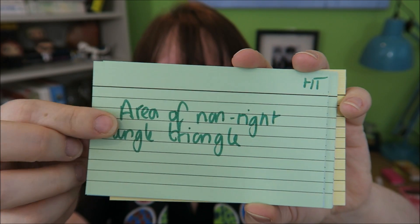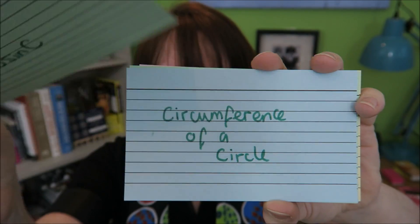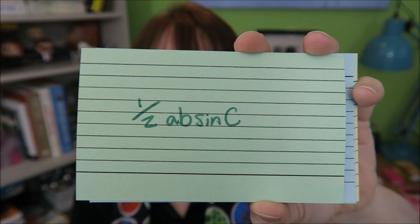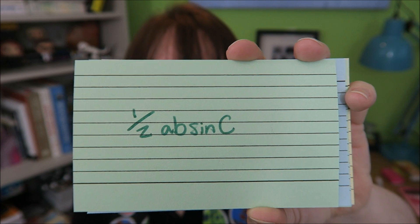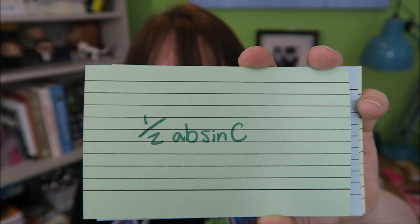Area of a non-right angled triangle. This is half A B, which is your length, sine C, which is an angle.